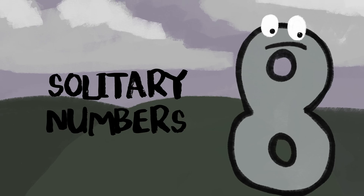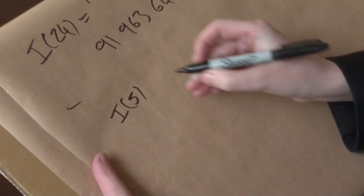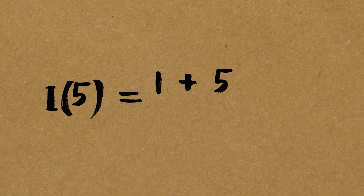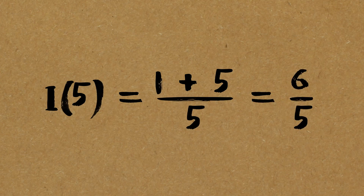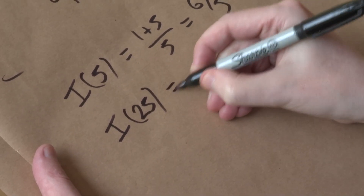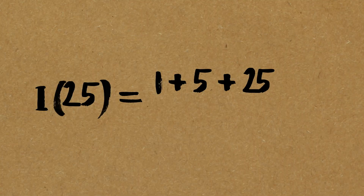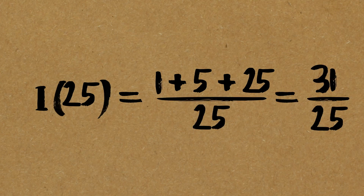Solitary numbers — the primes are solitary numbers, which kind of makes sense. Take 5: the factors are just 1 and 5, so the index is 1 plus 5 divided by 5, which is 6 over 5. There is no other number with that same index. The prime powers have the same problem — that means a prime number squared or cubed. For example, 25 is 5 squared: factors are 1, 5, and 25 itself, giving 31 over 25. There are no other numbers with the same index.